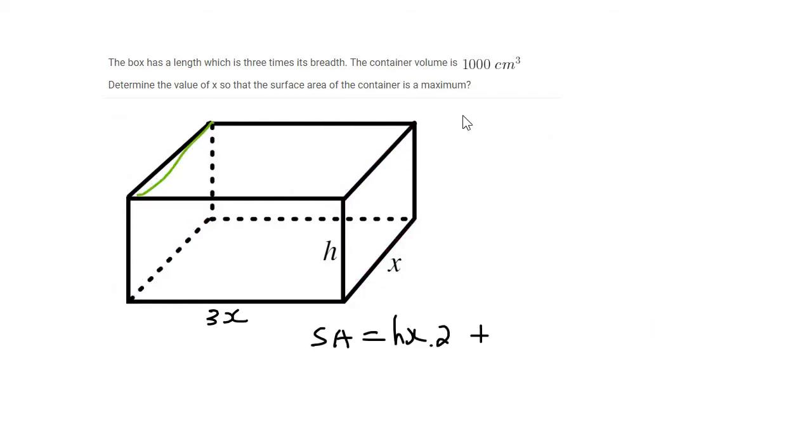And then we could maybe look at this top part. And that would be 3x times x. And there would be two of those because there's a top and a bottom. And then we could look at the part in the front, which would be 3x times h. But then there would be two of those.